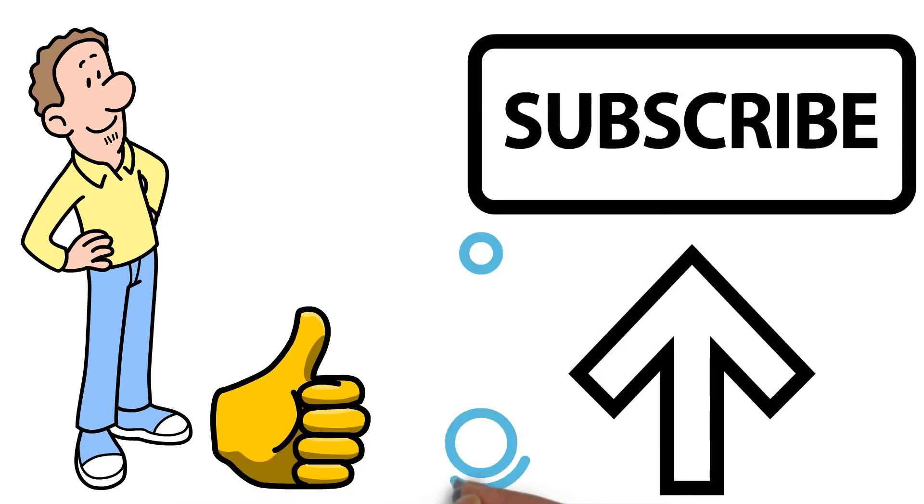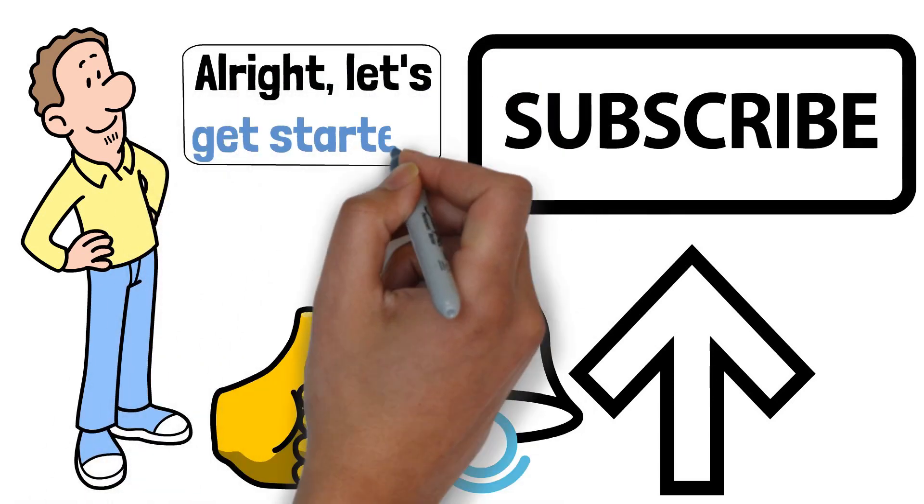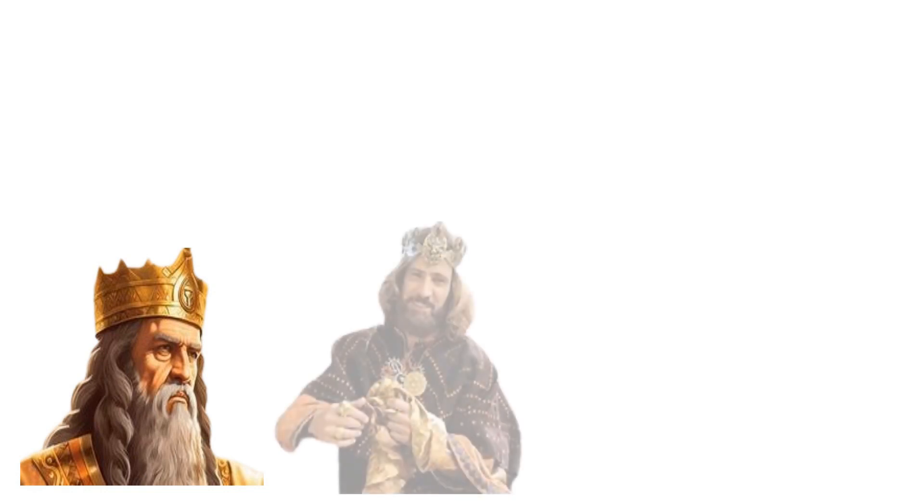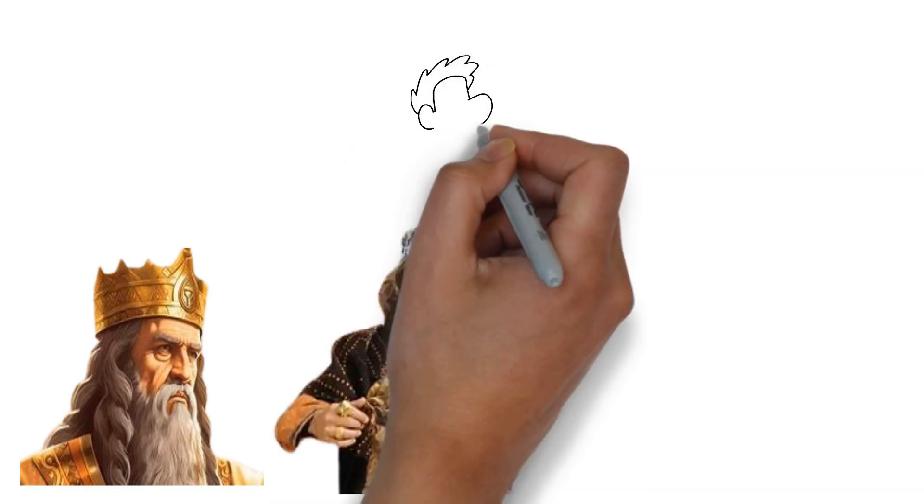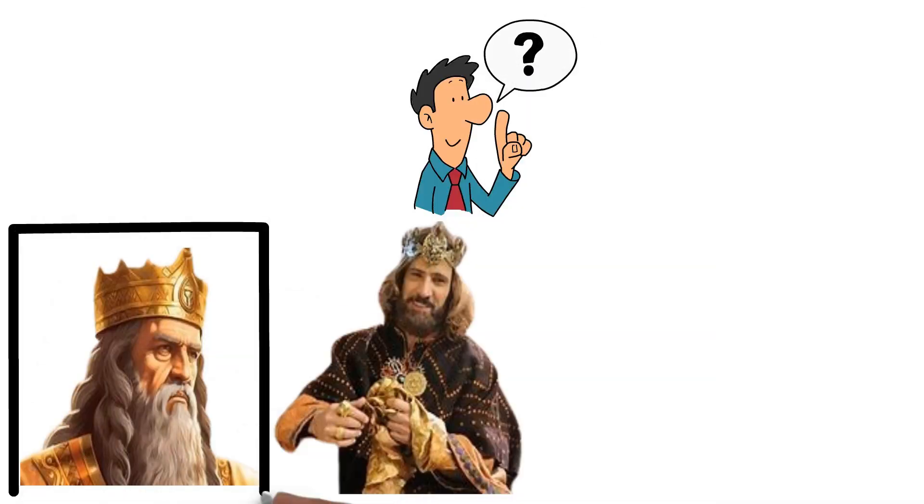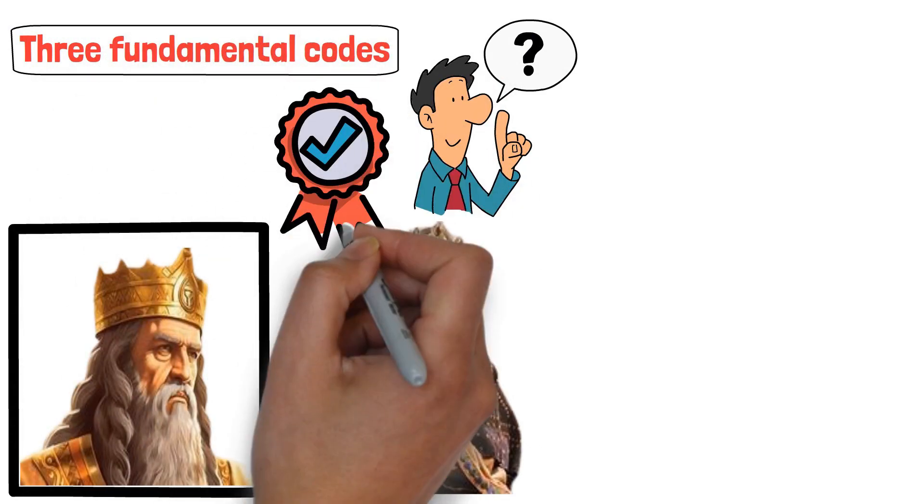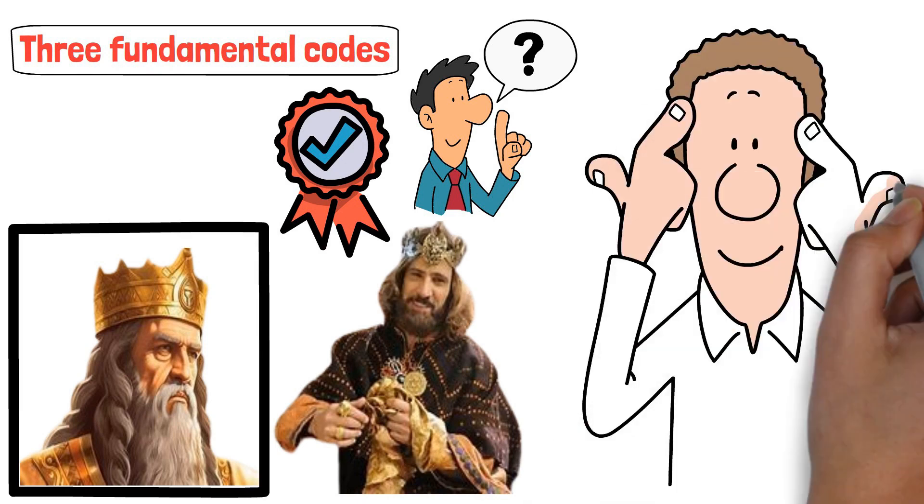Before we dive in, hit that like and subscribe button, and ring the notification bell to stay updated with valuable content like this. Now, we all know Solomon, the son of King David, was incredibly wealthy and wise. But what was the secret behind his immense fortune? The truth is, Solomon didn't just stumble upon his riches. He accessed three fundamental codes that propelled him to success. And guess what, you can access them too.